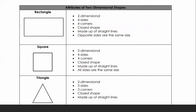There are attributes of two-dimensional shapes. A rectangle is two-dimensional, has four sides, four corners, is a closed shape, made up of straight lines, and opposite sides are the same size. A square is also two-dimensional with four sides and four corners, is a closed shape made of straight lines, but unlike a rectangle, a square has all equal sides.